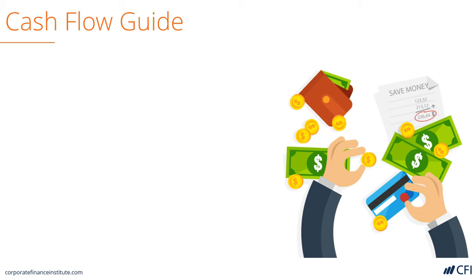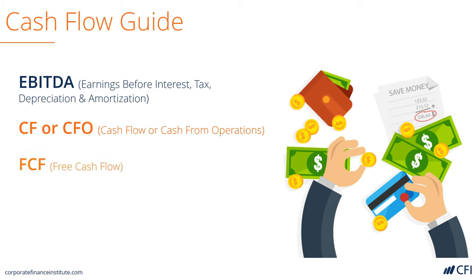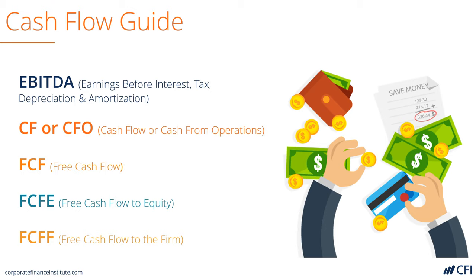In this cash flow guide, we're going to cover several types of cash flow or cash flow-like metrics, including EBITDA, cash flow or cash flow from operations, free cash flow, free cash flow to equity, and free cash flow to the firm, sometimes called unlevered free cash flow.